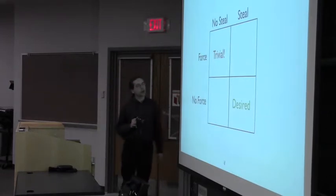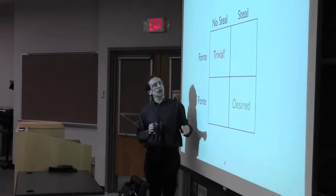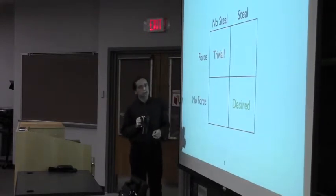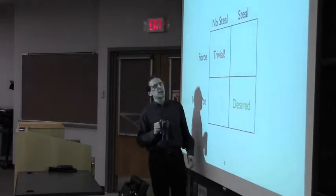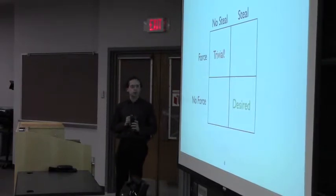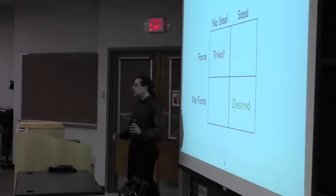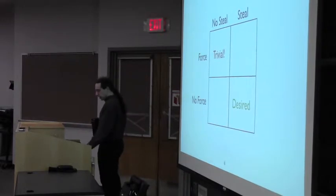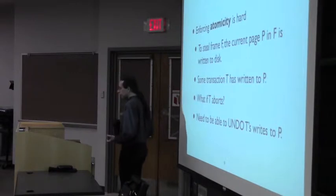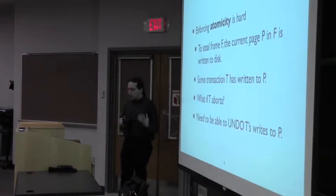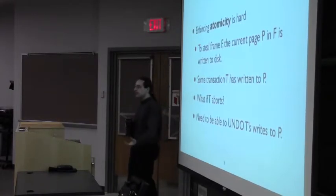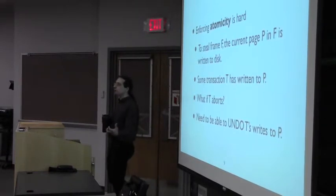If we force everything to disk and don't allow buffer frames to be stolen, that's a trivially safe solution — it gives us both atomicity and durability without programming overhead. But where we'd like to be is supporting both features: the ability to steal buffer frames from one transaction and avoid flushing data to disk wherever possible. Stealing is a metaphor for atomicity: when we steal a frame, that page gets written to disk, making effects of a transaction globally visible when we restart — but we won't know that transaction was aborted.